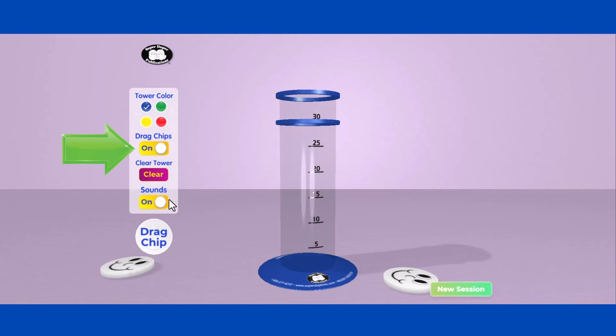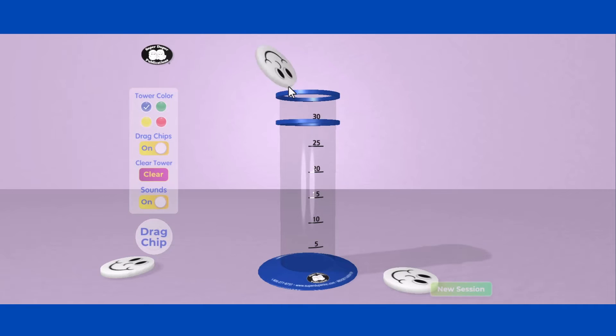Select Drag Chips to manually drag chips into the tower. Click, hold, and drag chips to the top.